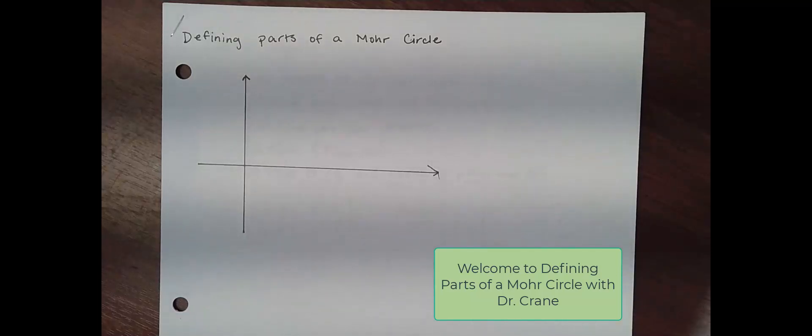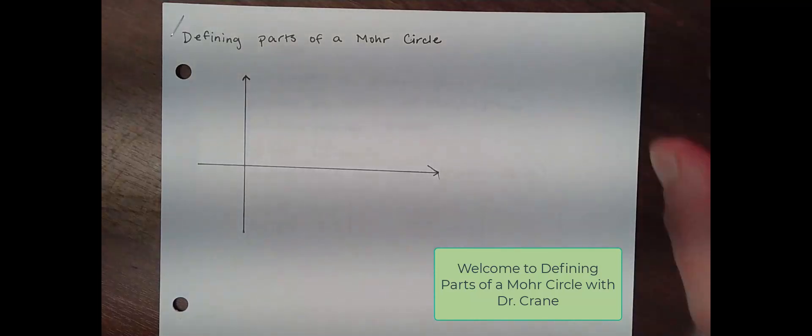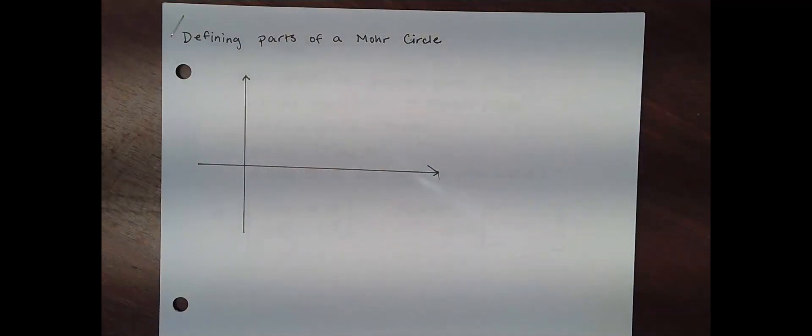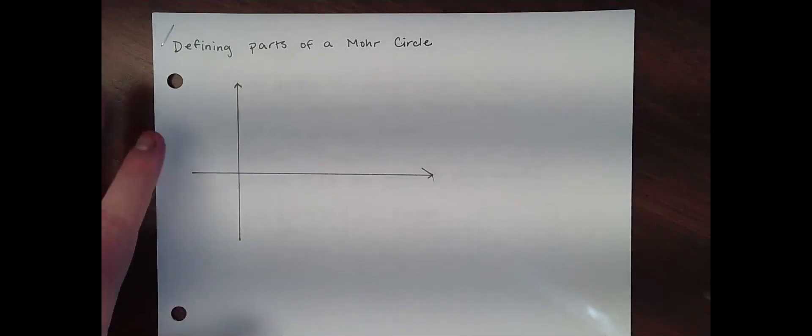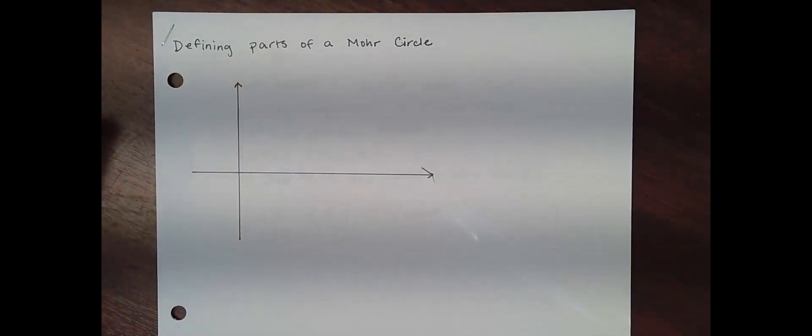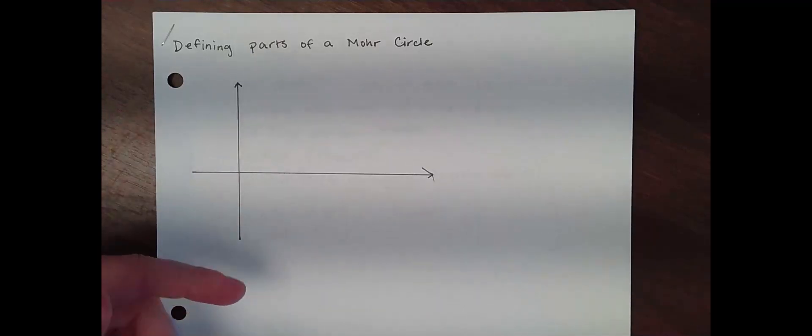In this video we are going to define the parts of a Mohr circle, going back over the basic pieces that define this diagram. This is the notes packet I give to my students. We have two axes: the y-axis, which is also our shear stress axis, and the x-axis, which is our normal stress axis.